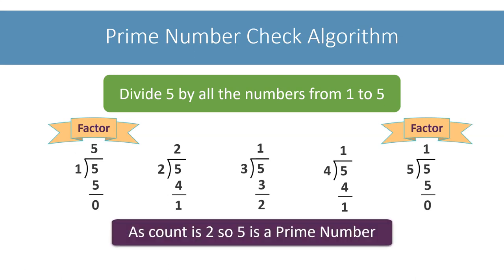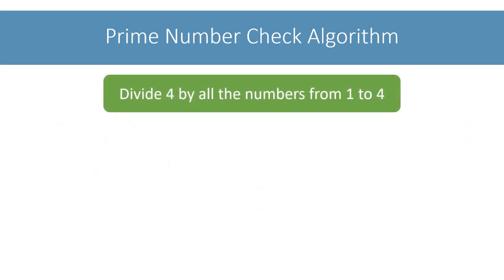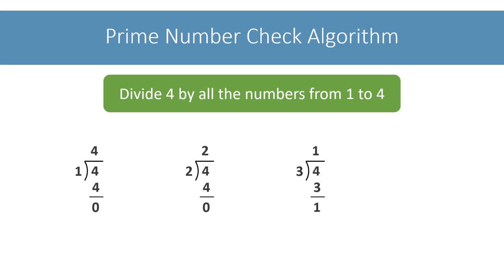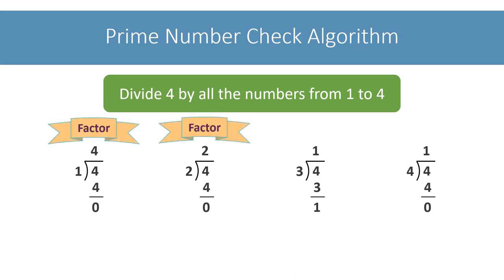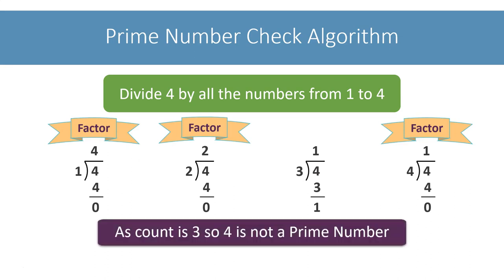Let's try the same thing with 4. I will divide 4 by all numbers from 1 to 4 — first by 1, then by 2, then by 3, and finally by 4 itself. The numbers that divide 4 are 1, 2, and 4, so 4 is divisible by 3 numbers, hence it is not a prime number. We will use this same logic inside the loop to check if i is a prime number or not.